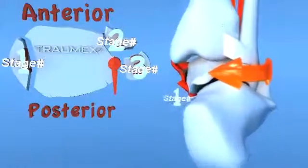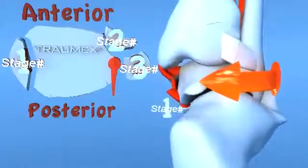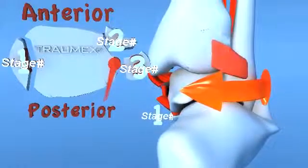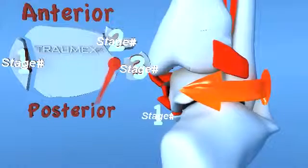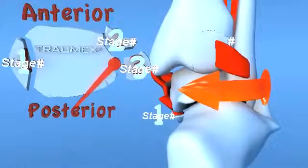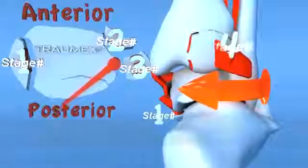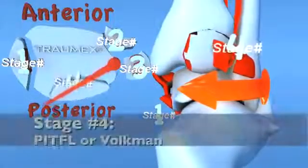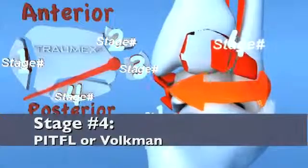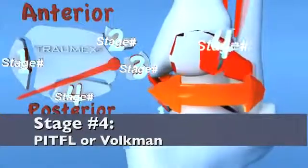If the forces progress into stage 4, either a rupture of the posterior tibial fibular ligament or a fracture of the posterior malleolus, also known as Volkmann's fracture, will occur.